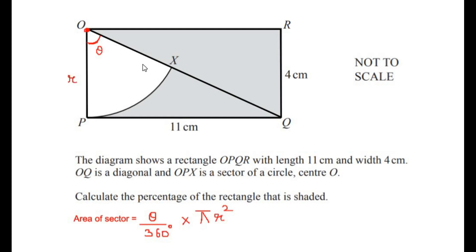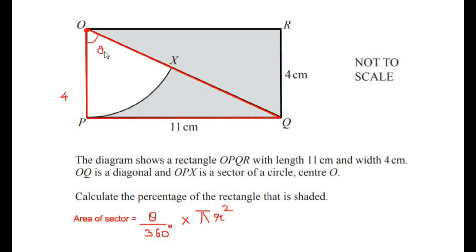Here we can see that RQ and OP are the widths of the rectangle, so if RQ is 4 centimeters, we have the radius as 4 centimeters as well. To find θ, the central angle of the sector, we make use of triangle OPQ. We are going to consider this triangle to find the value of θ.